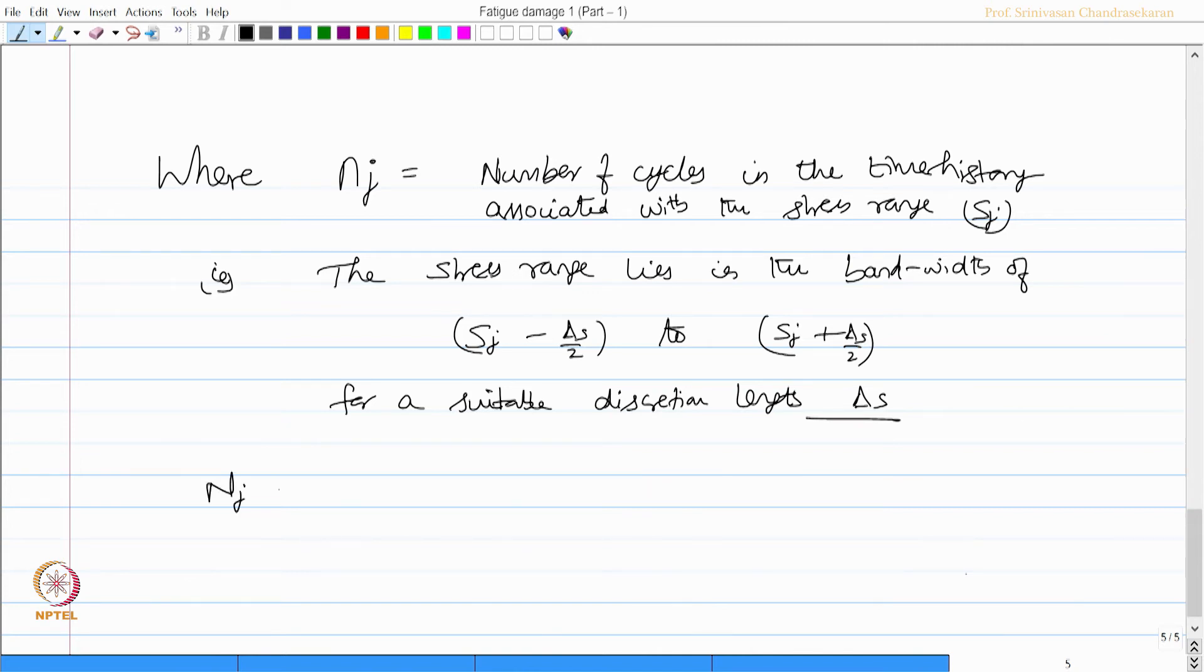Capital N_j is actually equal to k times S_j to the power minus m, which is the number of stress cycles to fracture with stress range S_j.